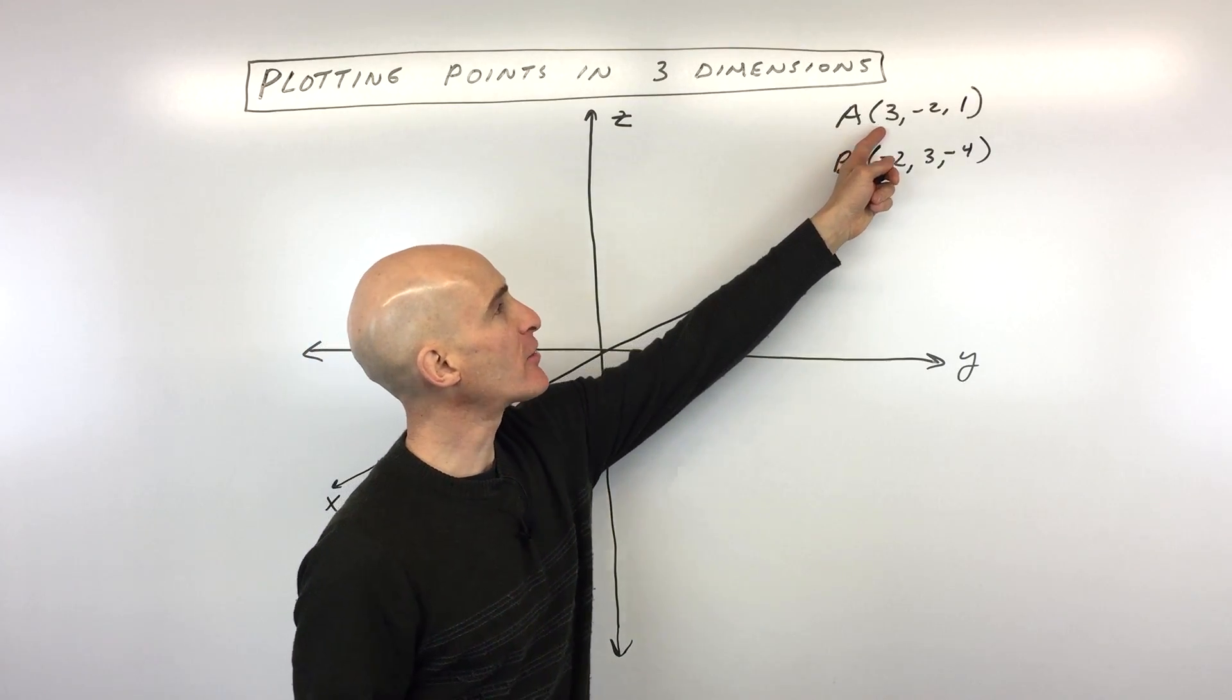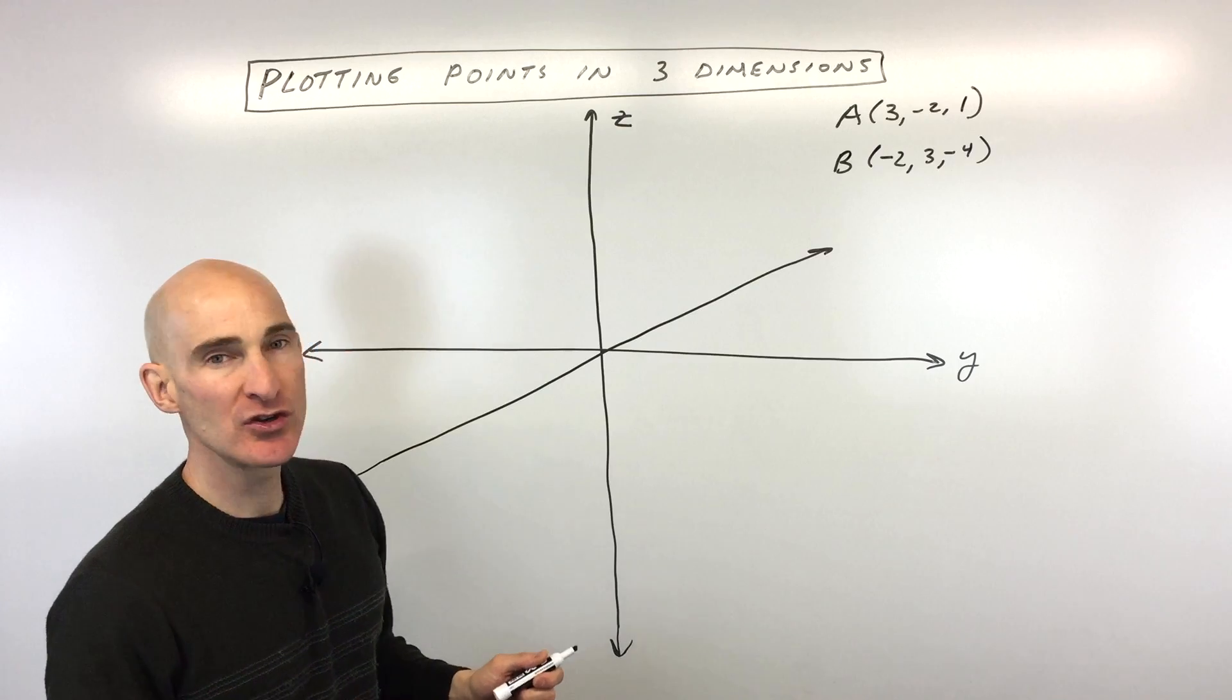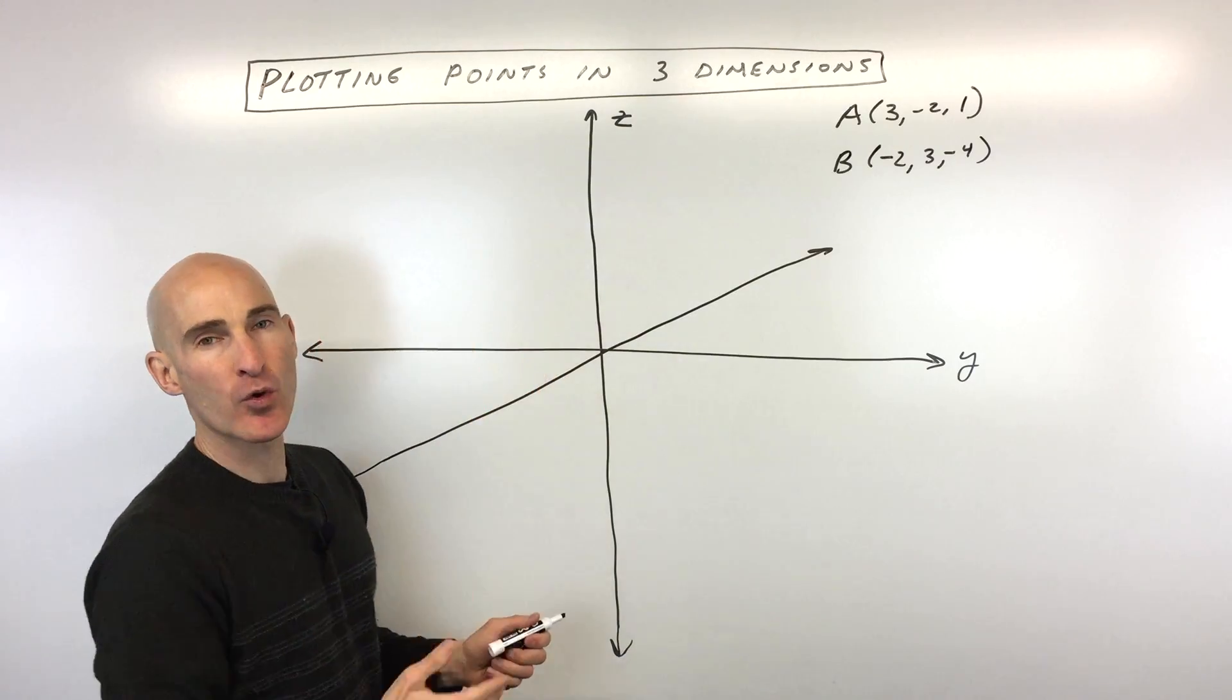Let's jump into this. The first point is 3, -2, 1. When we graph this, what we want to do first of all is set up our coordinate axis system.